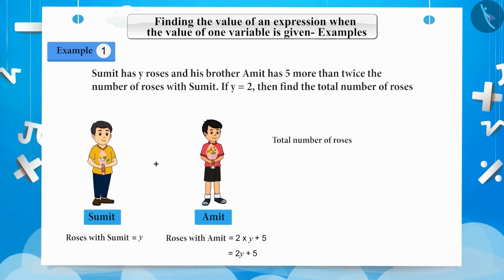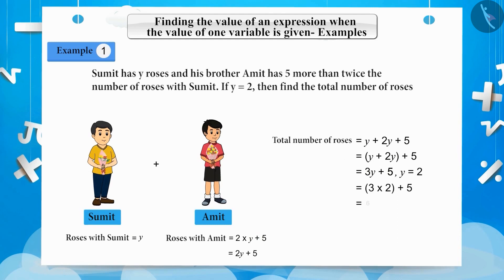The total number of roses will be y plus 2y plus 5. By simplifying this expression we get 3y plus 5. As we know the value of y is 2, substituting y with 2 we get 3 multiplied by 2 plus 5, equals 6 plus 5, equals 11. Hence, the total number of roses will be 11.